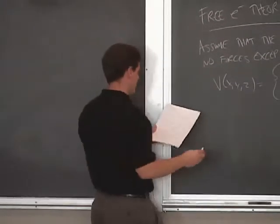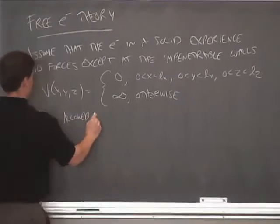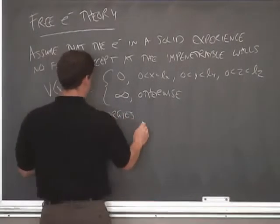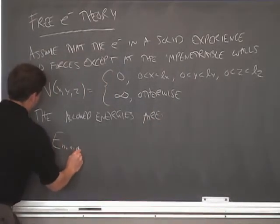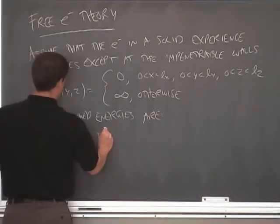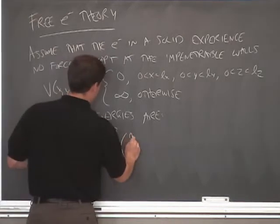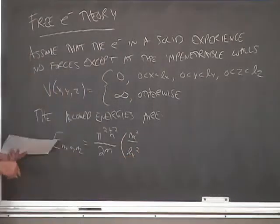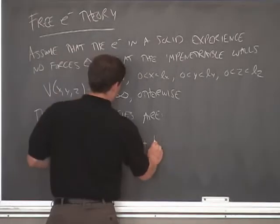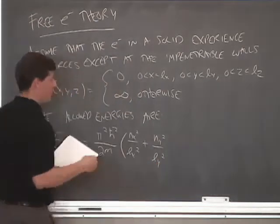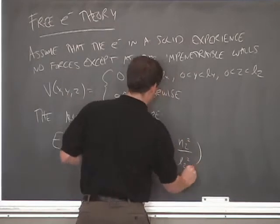The good news about this potential is that we've already solved it. This is a particle in a box. And the allowed energies are defined with respect to three quantum numbers, n sub x, n sub y, and n sub z. And it's equal to pi squared h bar squared over 2m times n sub x squared over l sub x squared for the x component. Remember how we would solve this problem is to do separation of variables in Cartesian coordinates. Plus n sub y squared over l sub y squared, which would come out of the y coordinate. Plus n sub z squared over l sub z squared, which would come from the z coordinate.